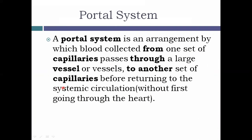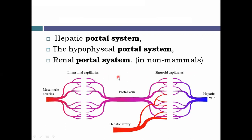Normally, blood flows from arteries to arterioles to capillaries, then through venules and veins. But in the portal system, blood flows from capillaries to another set of capillaries through a large vessel. Portal systems in our body include the hepatic portal system (our topic today), the hypophysial portal system, the renal portal system, and the portal system in the placenta.